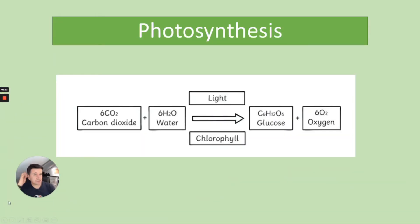So photosynthesis — this is the way that plants make their own food and you'll notice there is a word equation and also the symbol equation. If you're doing higher tier GCSE biology, you'll need to know both equations. If you're doing foundation tier, just the word equation will be fine.